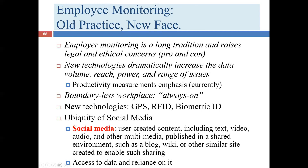Employees may be checking work information on their personal tools — phones, computers, laptops, or tablets — when they are at home, in transit, or on business trips. We might call this the 'always-on office.' So should there be differing approaches to the level of surveillance when a person isn't physically at work?